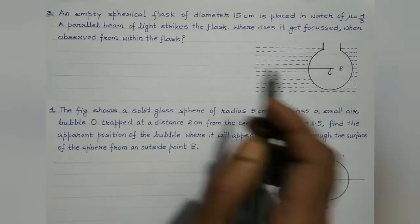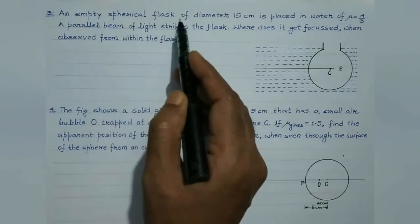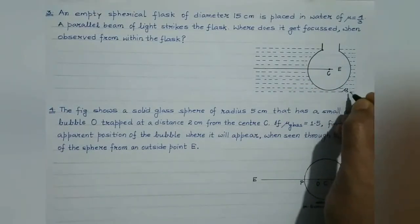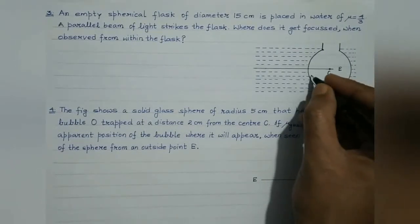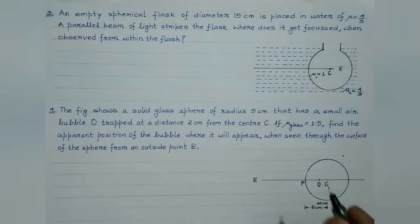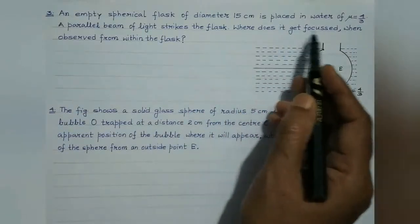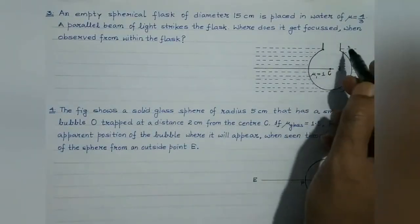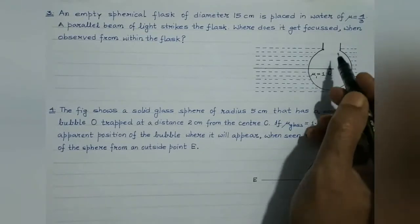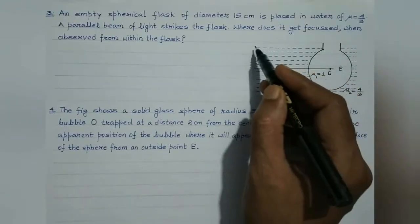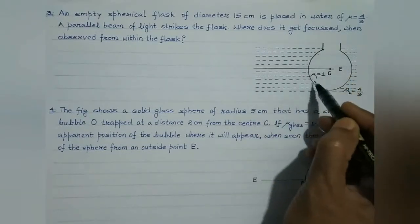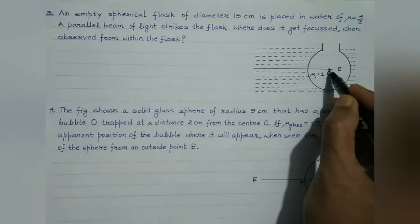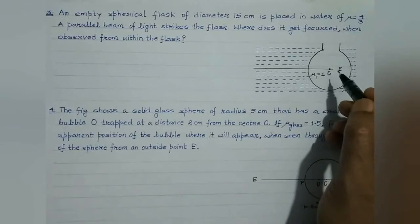Let's proceed to question number 3. An empty spherical flask of diameter 15 cm is placed in water of refractive index 4 by 3. Inside the flask is air, the rarer medium. A parallel beam of light strikes the flask — where does it get focused when observed from within the flask? The flask inside the water will behave as a concave refracting spherical surface. The denser medium is water and the rarer medium is air. The center of the flask also acts as the center of curvature of the concave spherical surface.